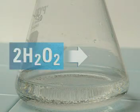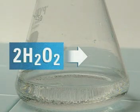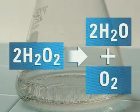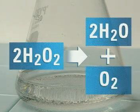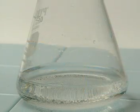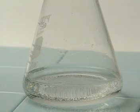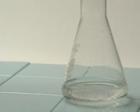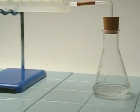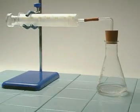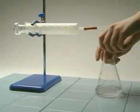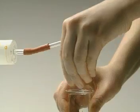This is hydrogen peroxide. It slowly decomposes to form water and oxygen. Any oxygen produced will be collected in the syringe, but at room temperature the reaction is so slow you'd think nothing was happening.